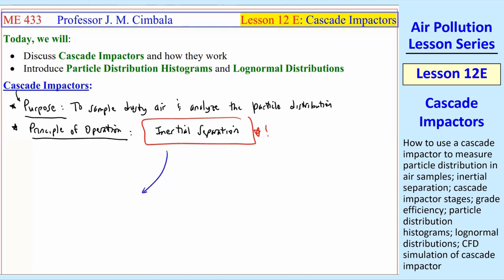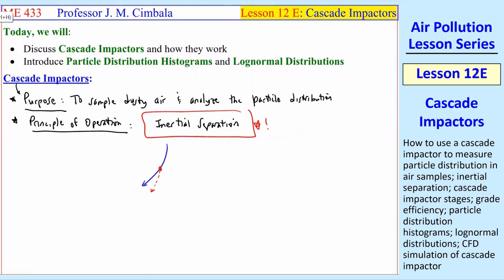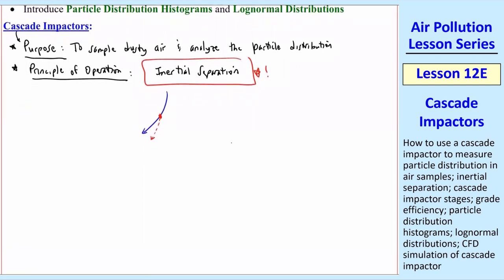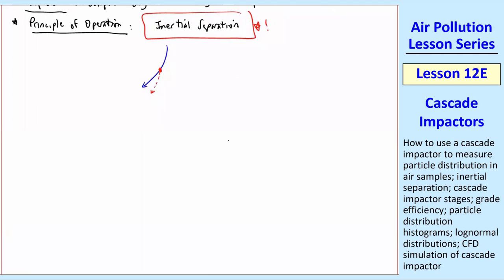So quick review, if this is an air streamline and this is a particle, the particle can't negotiate that turn, so it veers off radially outward. So people figured out how to use this principle to actually measure the particle distribution in dusty airflow.